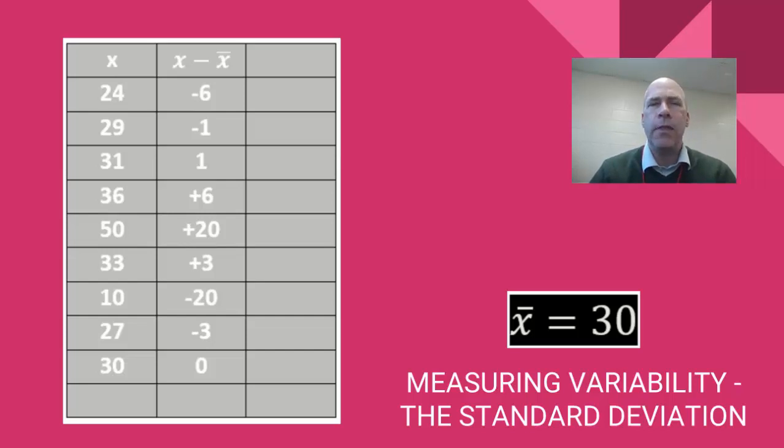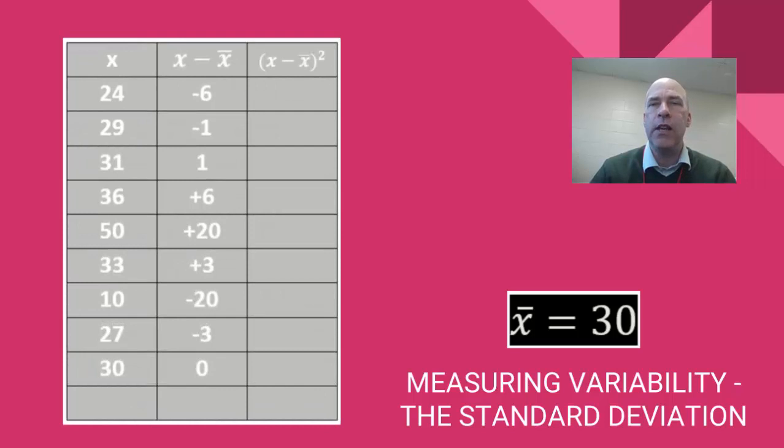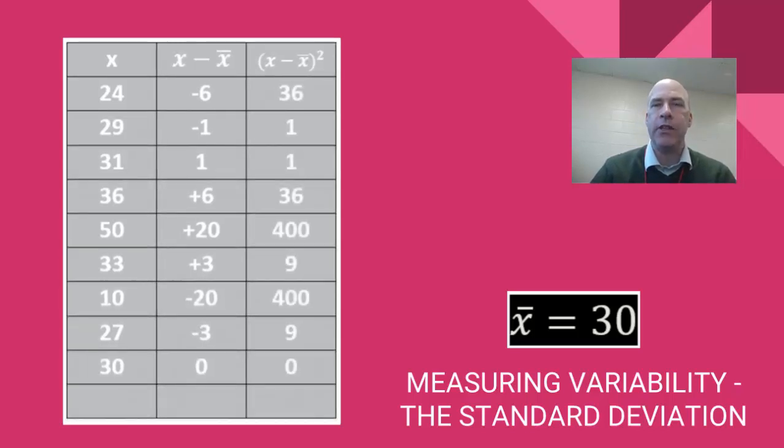So this third column is going to be to take all of the numbers, all the deviations, and square them. So the negative 6 becomes a 36. The negative 1 becomes a 1. And you can fill out that table like this.